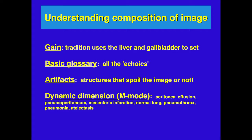Let's talk about understanding the composition of an image. The gain is a term you will hear very frequently. It traditionally uses the liver and gallbladder to set. The liver's appearance is called hepatization, and many structures that resemble the liver will also be described as hepatization. It's one of the first things ultrasounded, so it's frequently used as the template for gain settings.